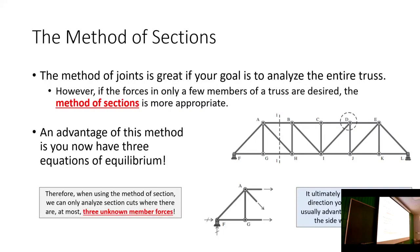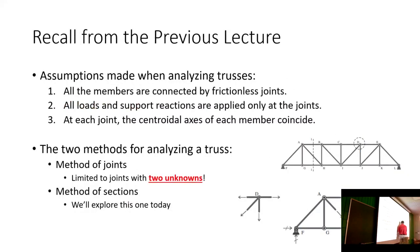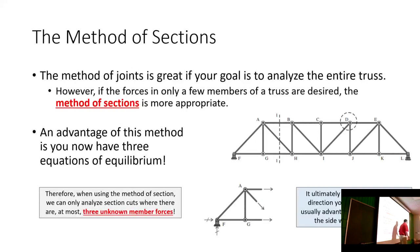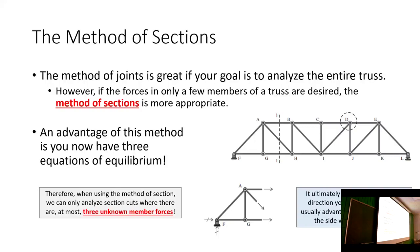The method of sections is not really the best method for analyzing the entire truss. It's really good if you're only interested in determining forces in a few members — spot checking, or finding a member in the middle of a big truss. One additional benefit is that when we cut a section, we get a free body diagram where the forces don't all go through a common point. That means we now have a non-concurrent force system, and we can apply our third equation of equilibrium: the sum of moments. That's why we can cut a section through at most three unknown members.